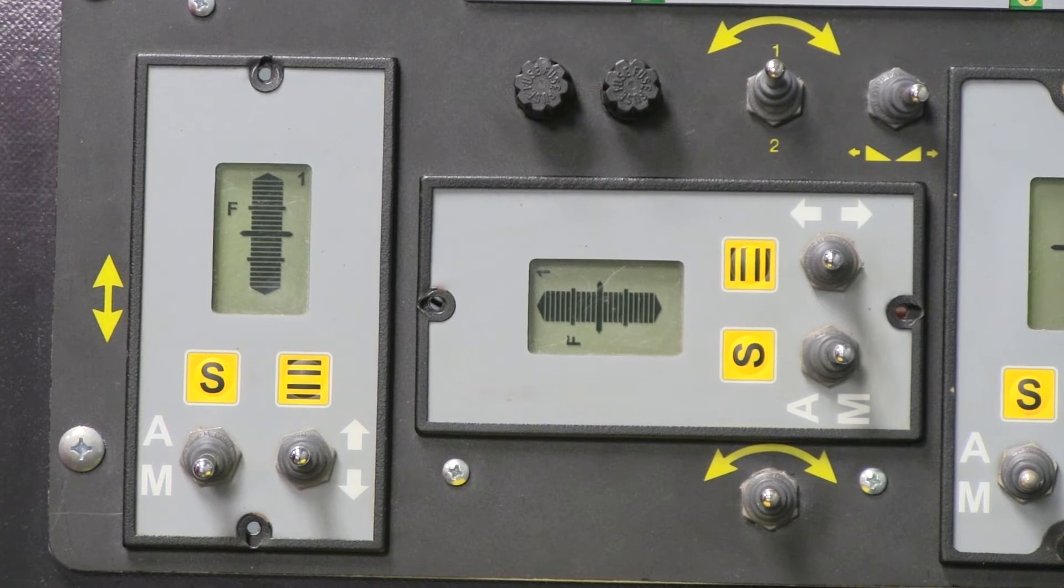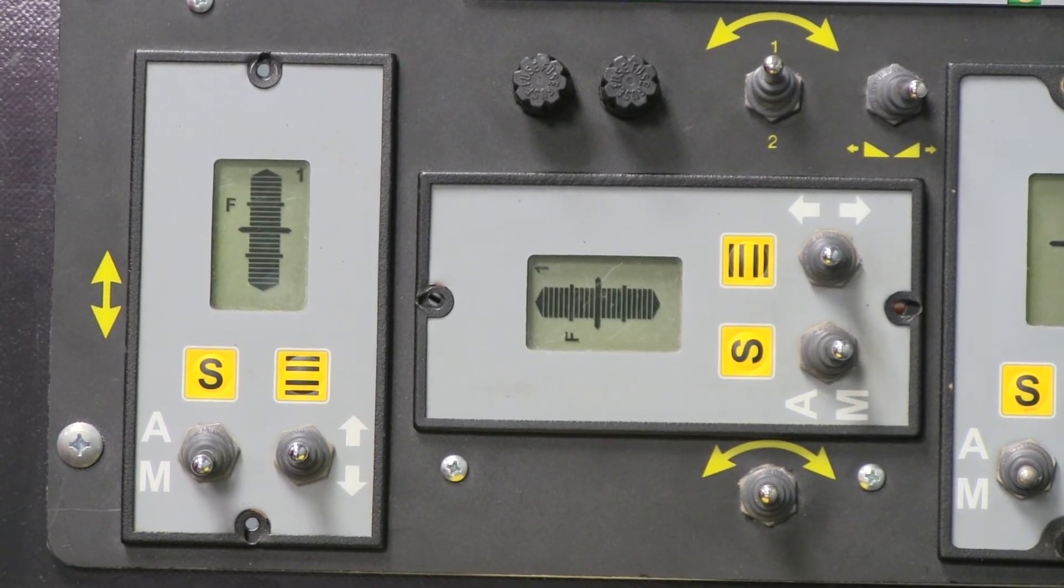An F will flash on the screen if the amp is in auto, but no sensor is detected.